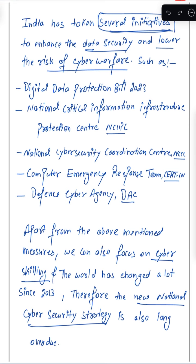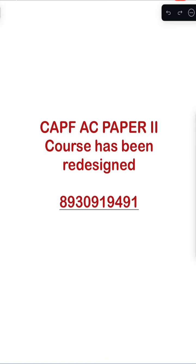The world has changed a lot since 2013. I mentioned this because the National Cyber Security Policy 2013 is widely known and discussed in classrooms. There is a new committee under Lieutenant Colonel Rajesh Panth working on a new National Cyber Security Policy since 2021, expected to be released around 2023. Therefore, the new National Cyber Security Strategy is long overdue — a new policy should come because in the ten years since 2013, many things have changed.